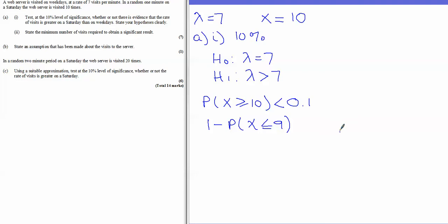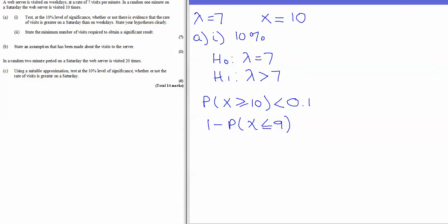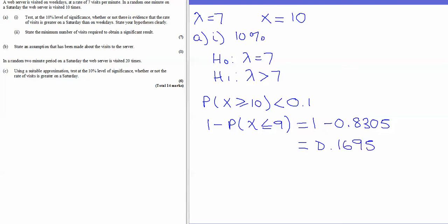Looking in the Poisson tables at lambda equals 7, we go down and find that the probability of X being less than or equal to 9 is 0.8305. So the probability of X being greater than or equal to 10 is 1 minus 0.8305, which gives 0.1695.